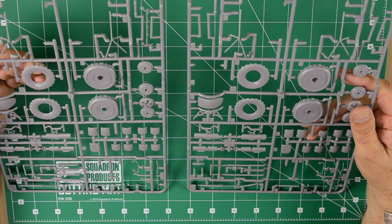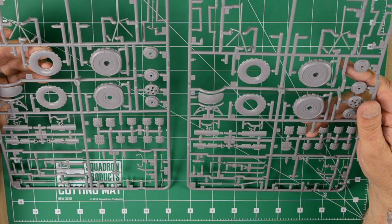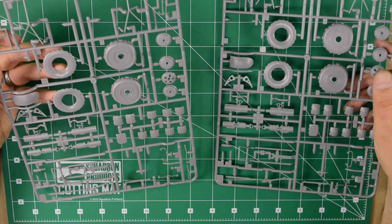Tamiya provided two sprues with the same parts since there's no left and right for the landing gear, so this is going to be easy. Let's start with the landing struts themselves.